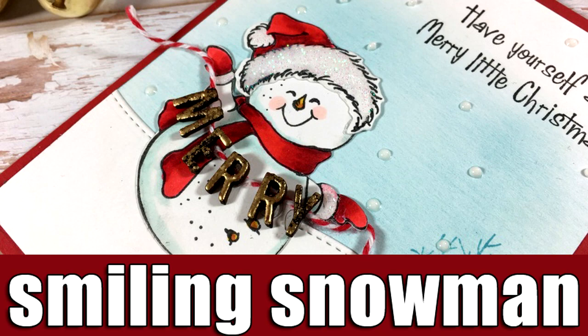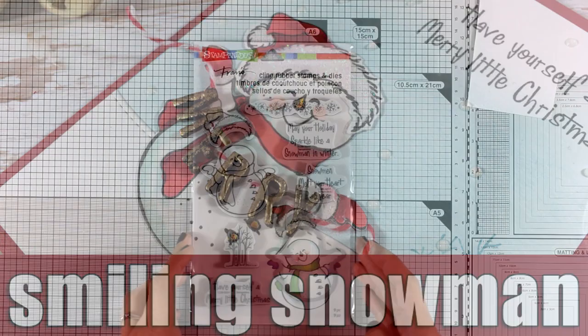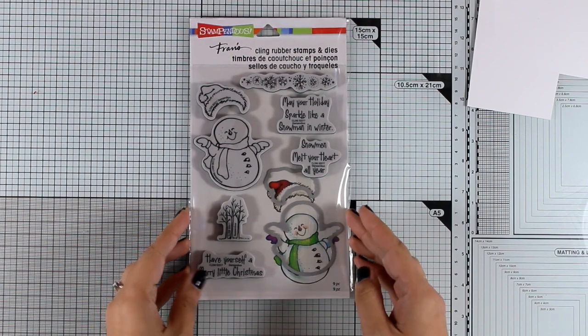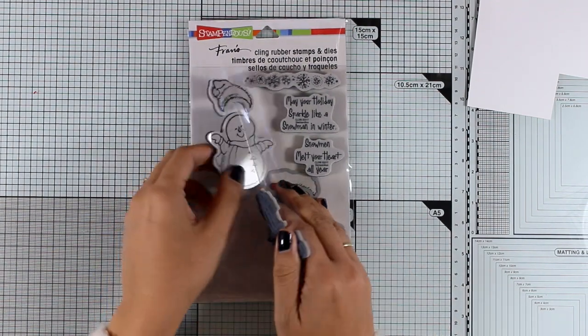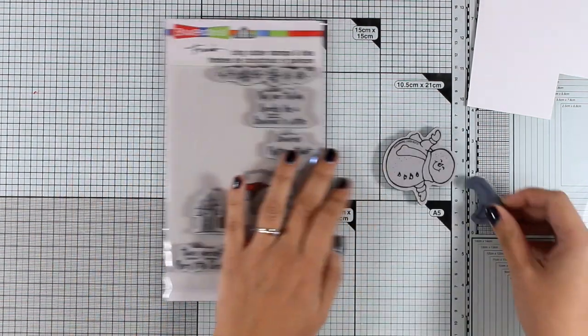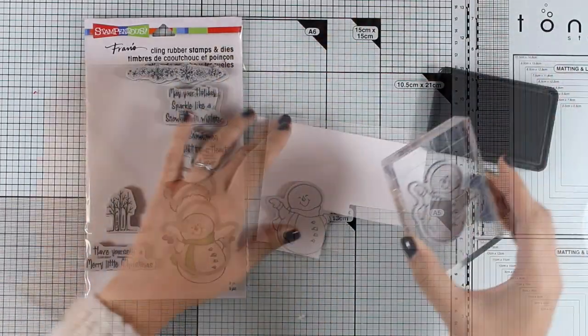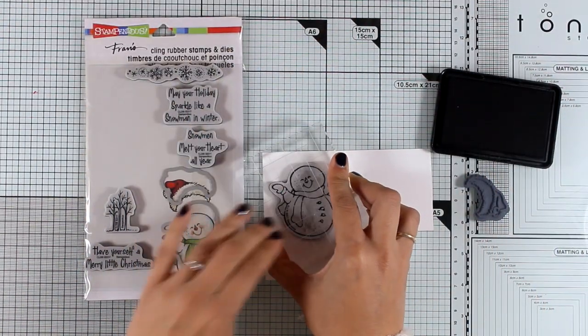Hi, it's Vicky here and welcome to the fourth day of my week featuring Stampendous. Today I will be working with a smiling snowman. This is a stamp set and die set. First of all, I'm going to start by stamping the snowman and the hat.